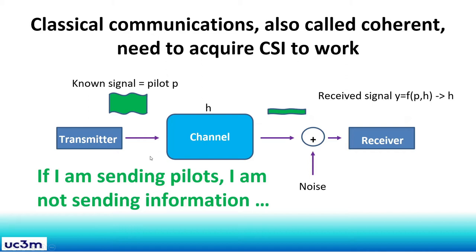In classical communications, also called coherent, we need to acquire channel state information for the system to work. In this case, a transmitter sends a known signal, also called a pilot, usually referred to as P, that goes through a channel and then some noise is added at the receiver. The received signal Y is processed using the known pilot to estimate the channel. The problem is that if I am sending pilots, I am not sending information.